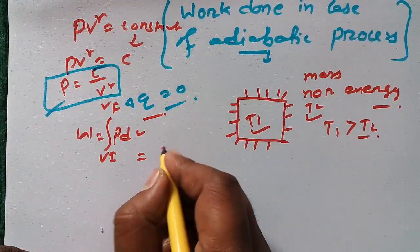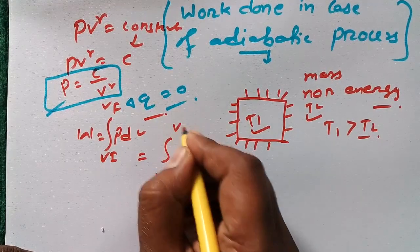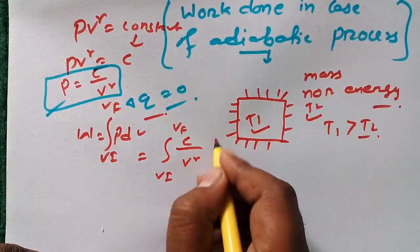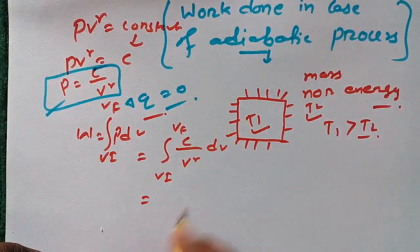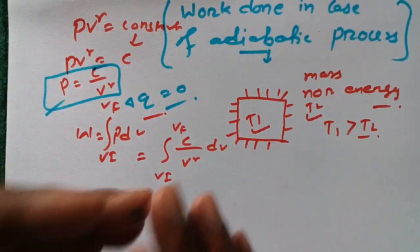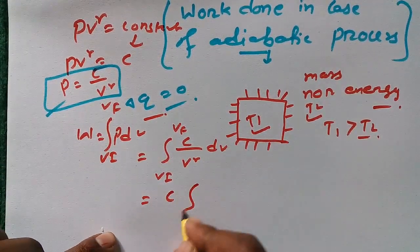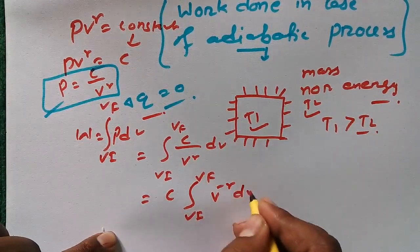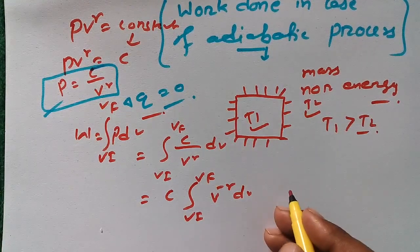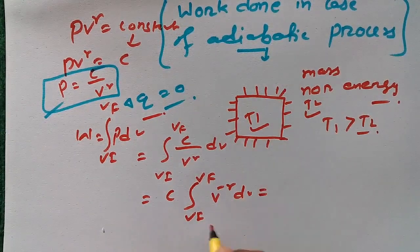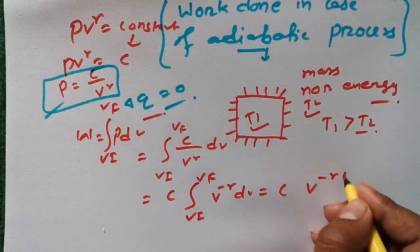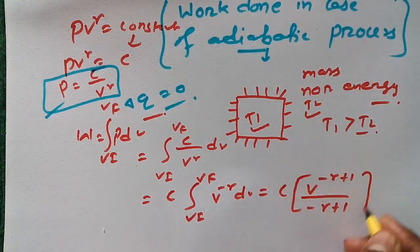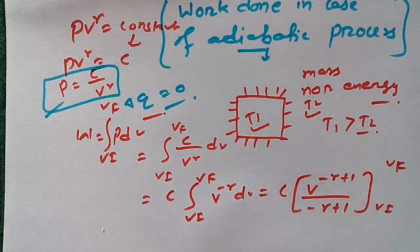What we have is integral from VI to VF of C V to the power minus gamma dV. We're going to simplify this: C times integral V to the power minus gamma dV. So we integrate this: C V to the power minus gamma plus 1, divided by minus gamma plus 1, with integration limits VI to VF.